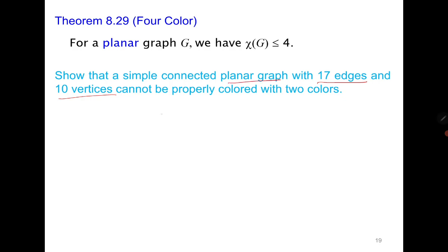Cannot be colored with two colors means it cannot be bipartite. Recall that for a planar bipartite graph the maximum number of edges is 2p minus 4. Here p equals 10, so the bound is 2 times 10 minus 4 equals 16. If the graph were bipartite and planar, it could have at most 16 edges. But it is given to have 17 edges, which means it cannot be bipartite, and therefore cannot be colored with two colors — it is also not a null graph.